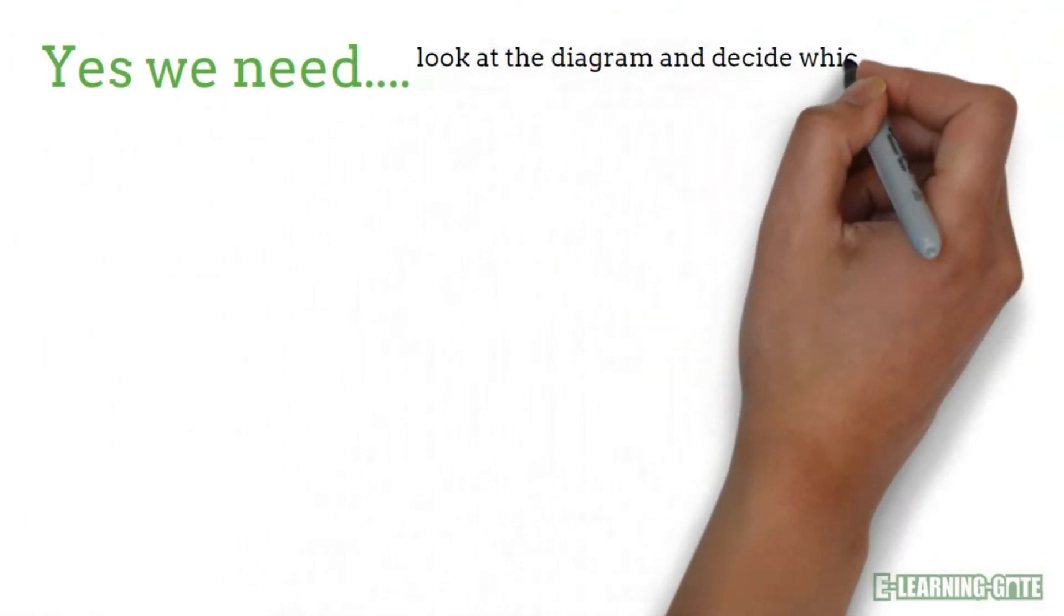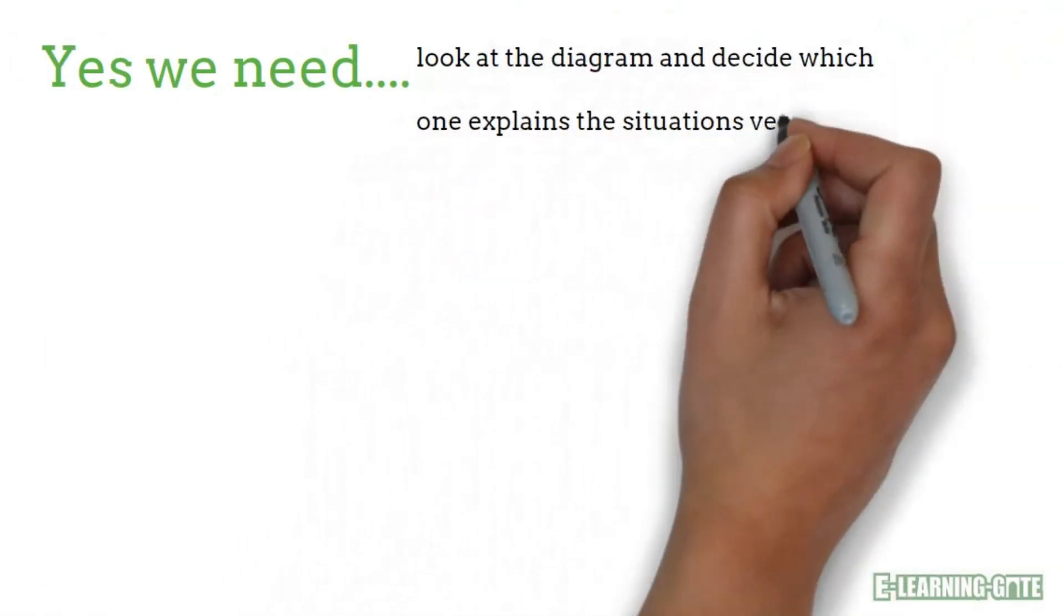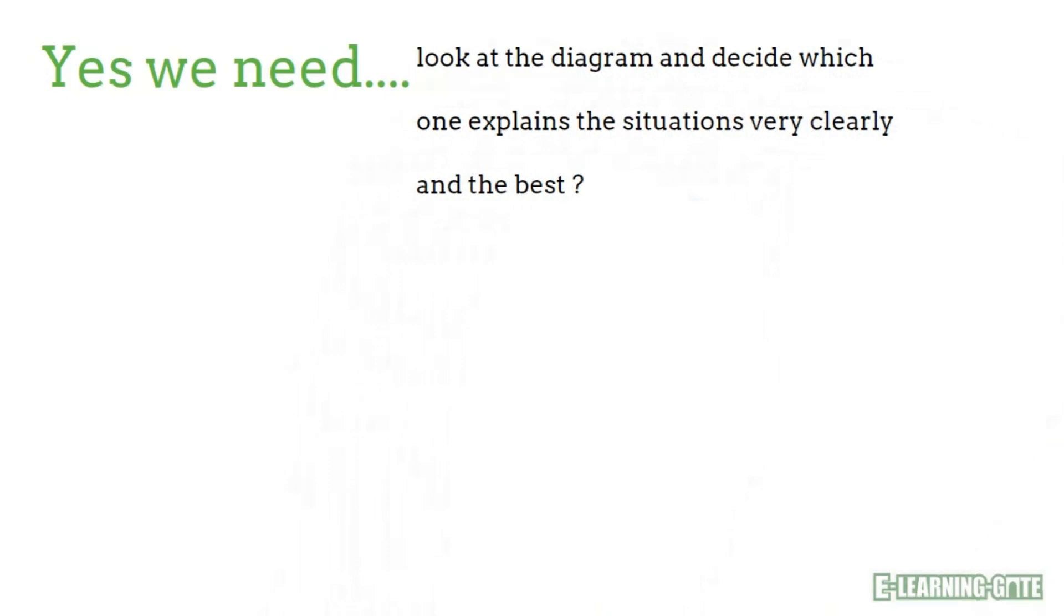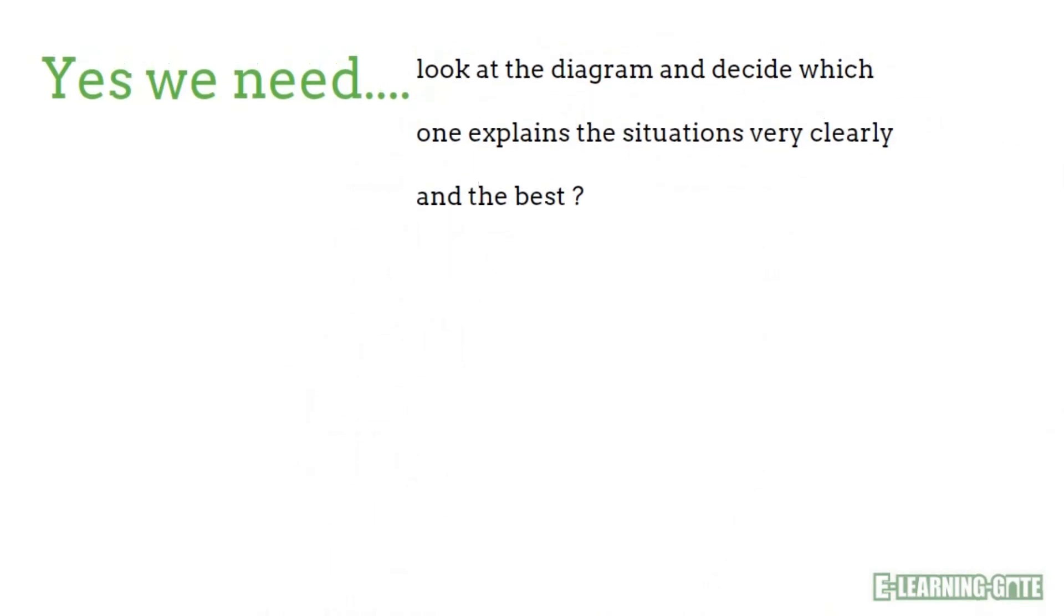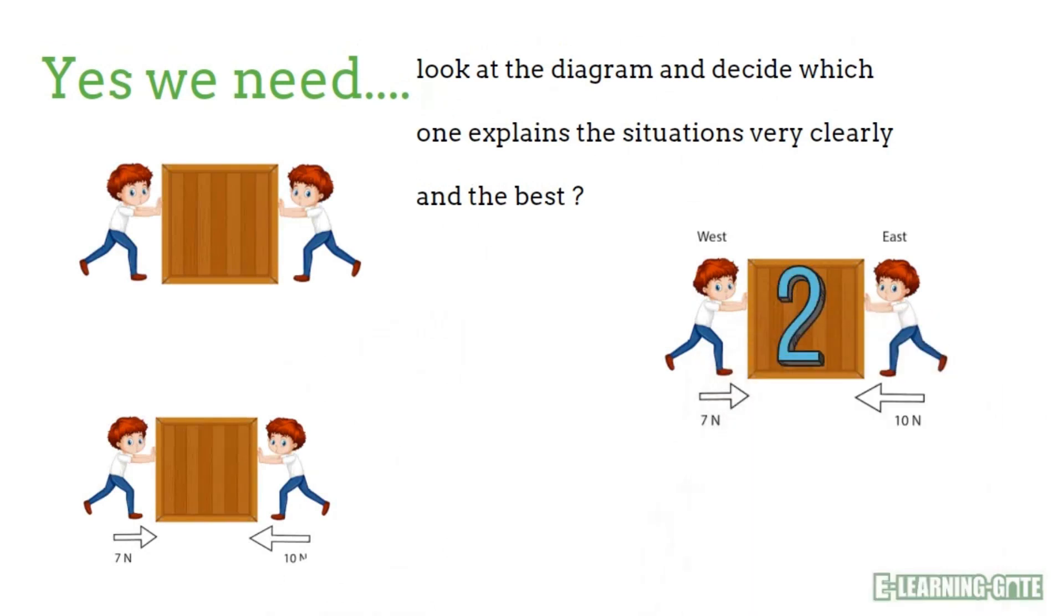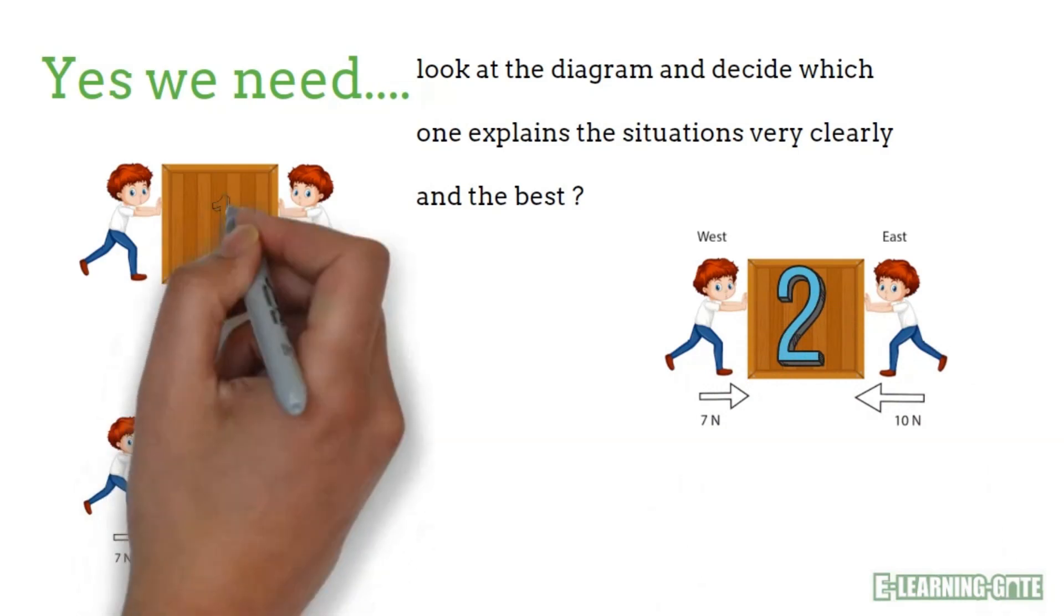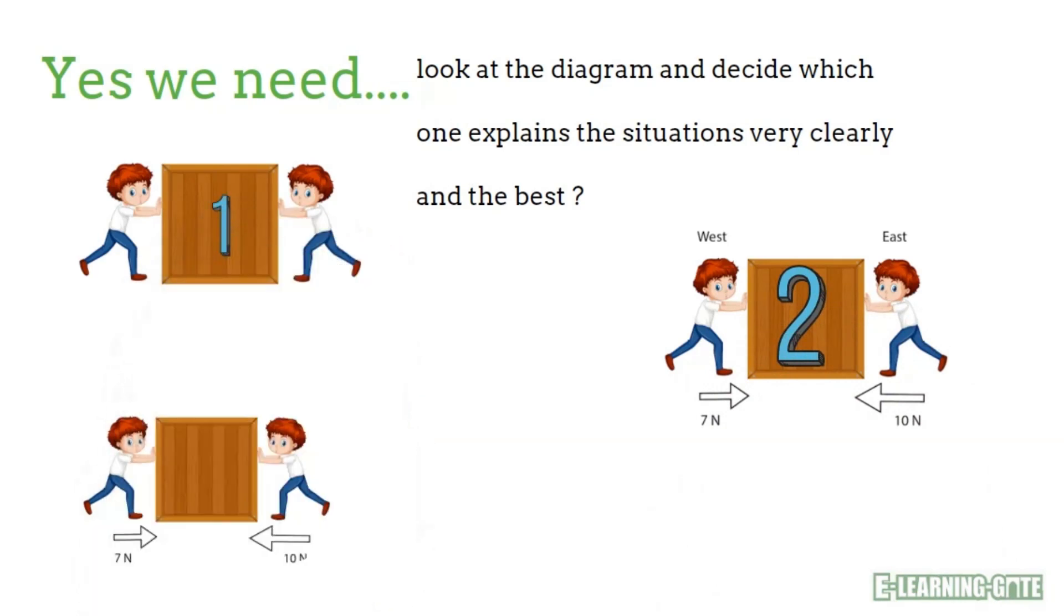Look at the diagram and decide which one explains the situation very clearly. Two boys are pushing the box towards each other. Which diagram will you choose to be the perfect understanding of the situation? One, two, or three?